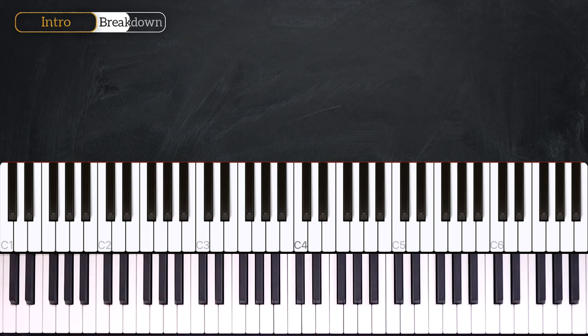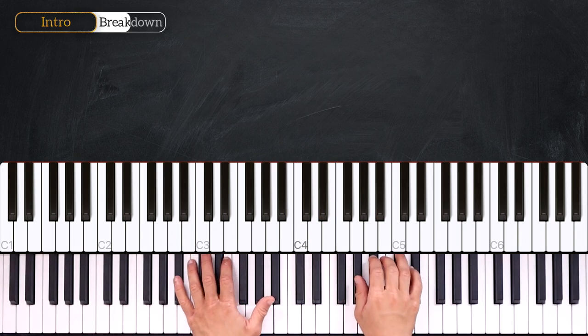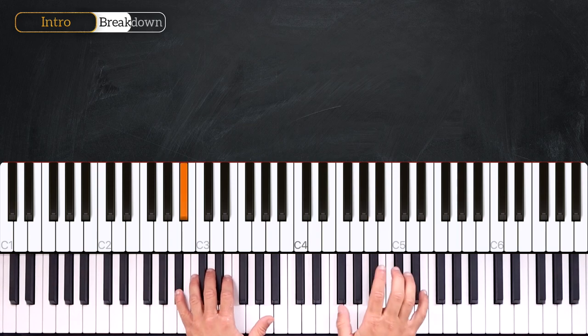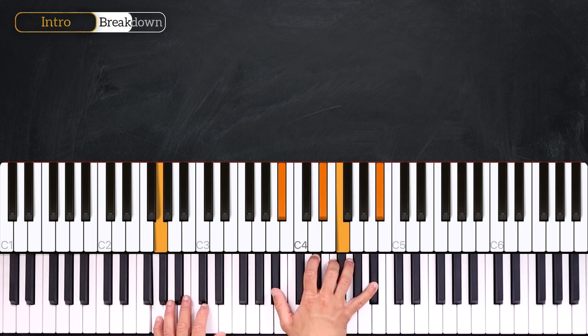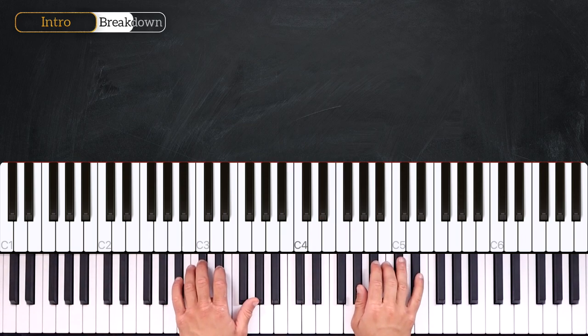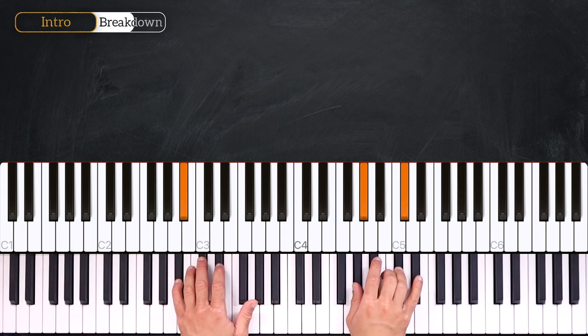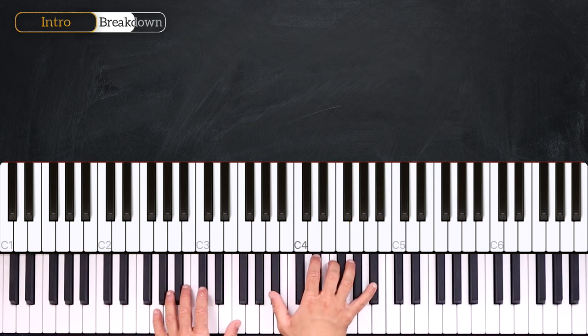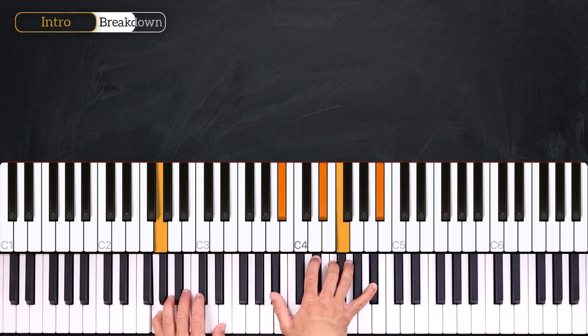And we end on this Eb sus2 over G. The whole thing sounds just like this. 3, 4. So let's play it slower together. 3, 4. Very nice.